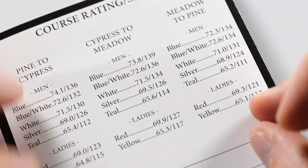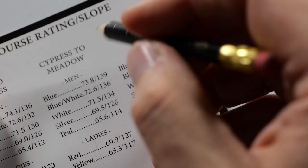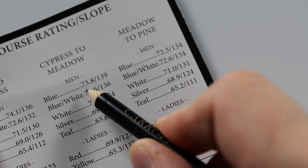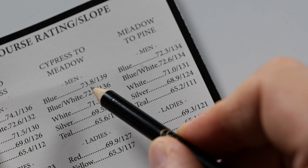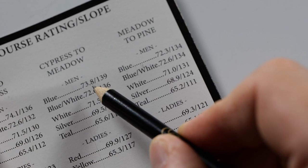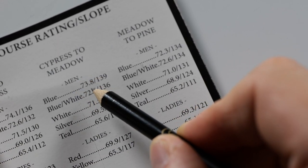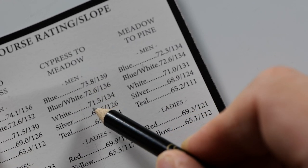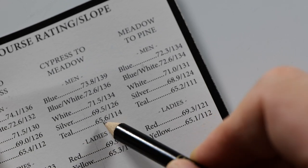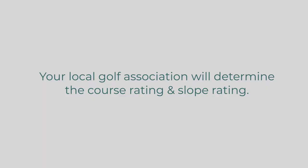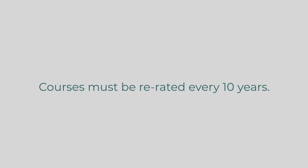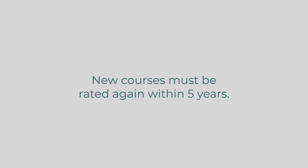Any scorecard you have is going to show you the slope rating and the course rating. On this course, Cypress to Meadow, from the Blue Tees, our course rating is 73.8 and our slope rating is 139. The course rating is what a scratch golfer would generally shoot from that set of tees — so from the Blue Tees, a scratch golfer on this par 72 course could shoot around a 73.8. A representative from your local governing body of golf will come to your course and perform observations, measurements, and calculations to determine the difficulty and assign a course rating, along with a slope rating for each of the tees.